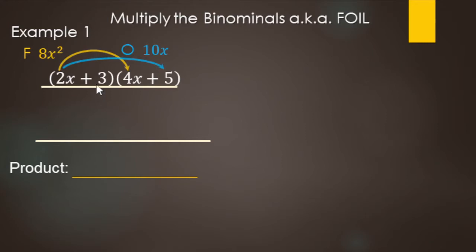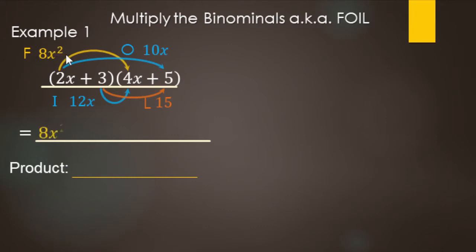Now we do 3 times 4x, then 3 times 5. So 3 times 4x — that's in the middle, we call that the Inners — and that's going to be 12x. And then for the Lasts: the 3 is at the end of the first binomial and the 5 is at the end of the second, so that's the Lasts, and 3 times 5 is 15. So we have 8x squared, then 10x from the outers, 12x from the inners, and 15 from the lasts.